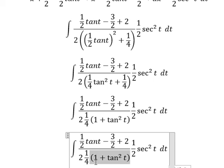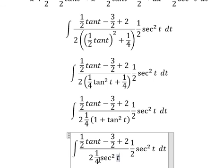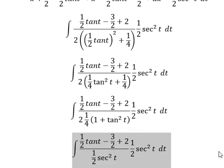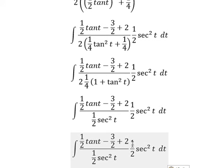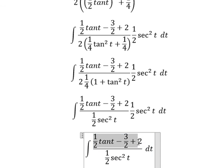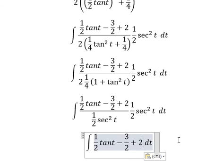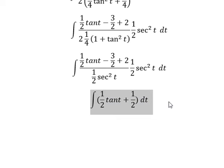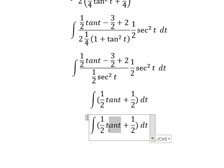This one we get about secant squared t, this one we get about 1 over 2. This one and this one will give about 1 over 2. Tan t we will change to sine t over cosine t.